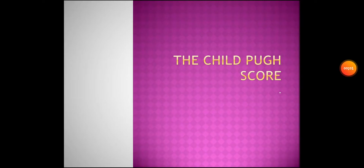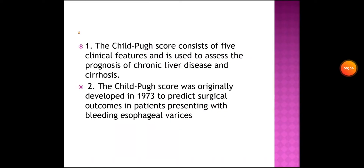Hello everyone. Today we'll be talking about the Child-Pugh score. The Child-Pugh score consists of five clinical features and is a score used to assess the prognosis of chronic liver disease and cirrhosis. It was originally developed in 1973 to predict surgical outcomes in patients presenting with bleeding esophageal varices.